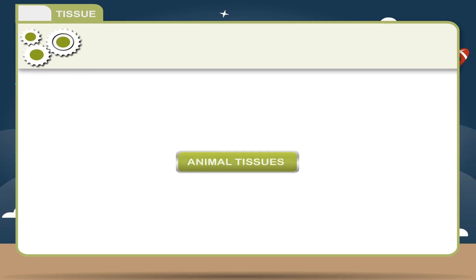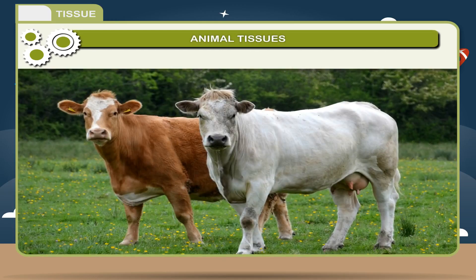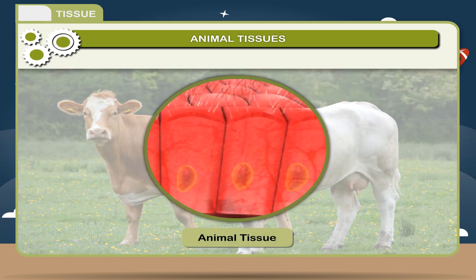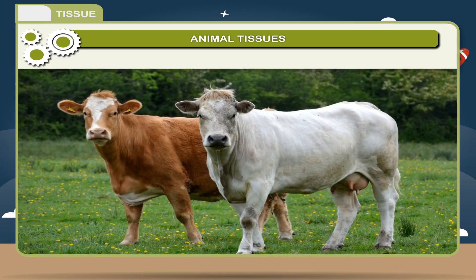Animal tissues. Like plants, animals are also made up of different types of cells. When a group of similar cells perform a particular function in an animal, it is referred to as tissue. These tissues can be differentiated into four groups according to the structure and function of the cells. The four types of tissues are: